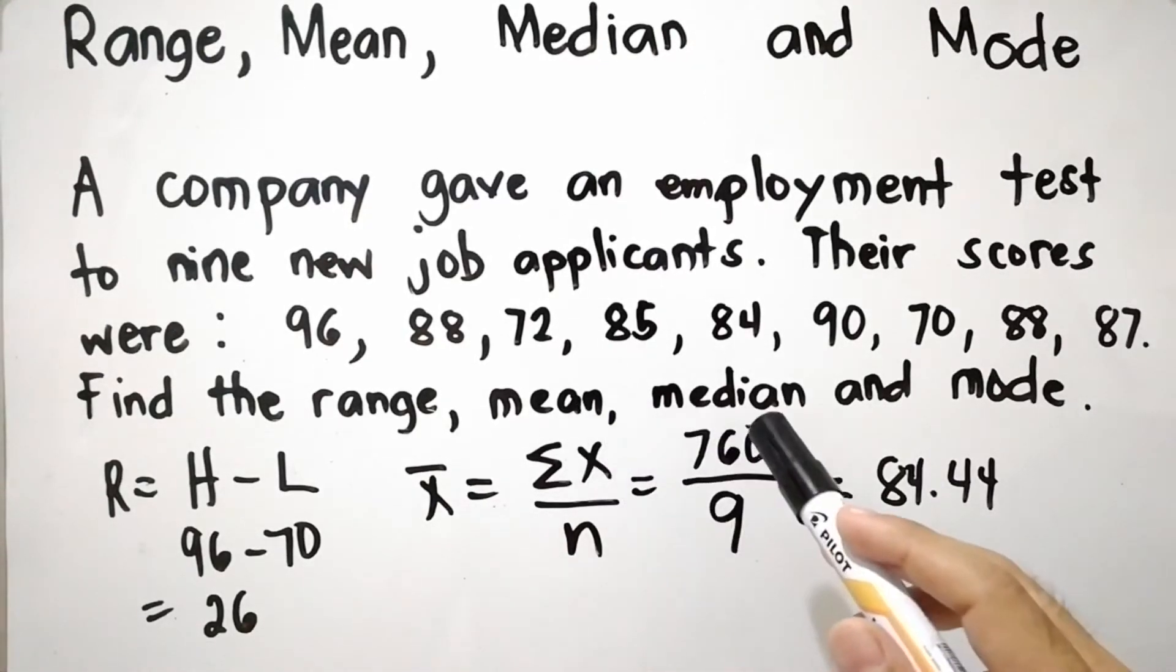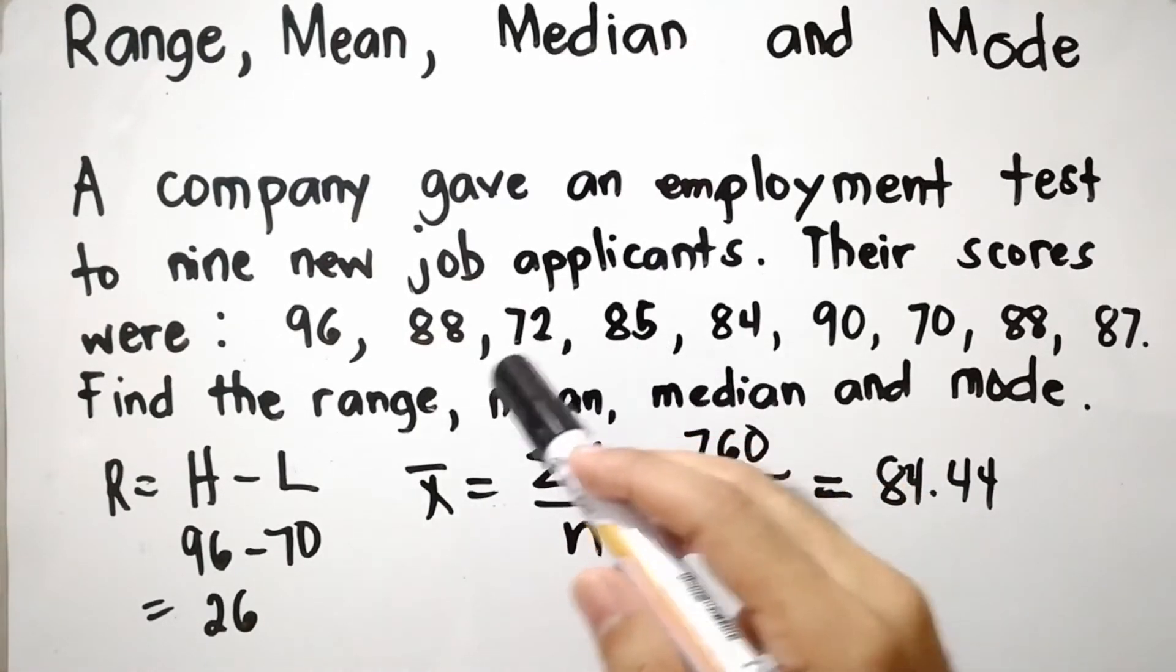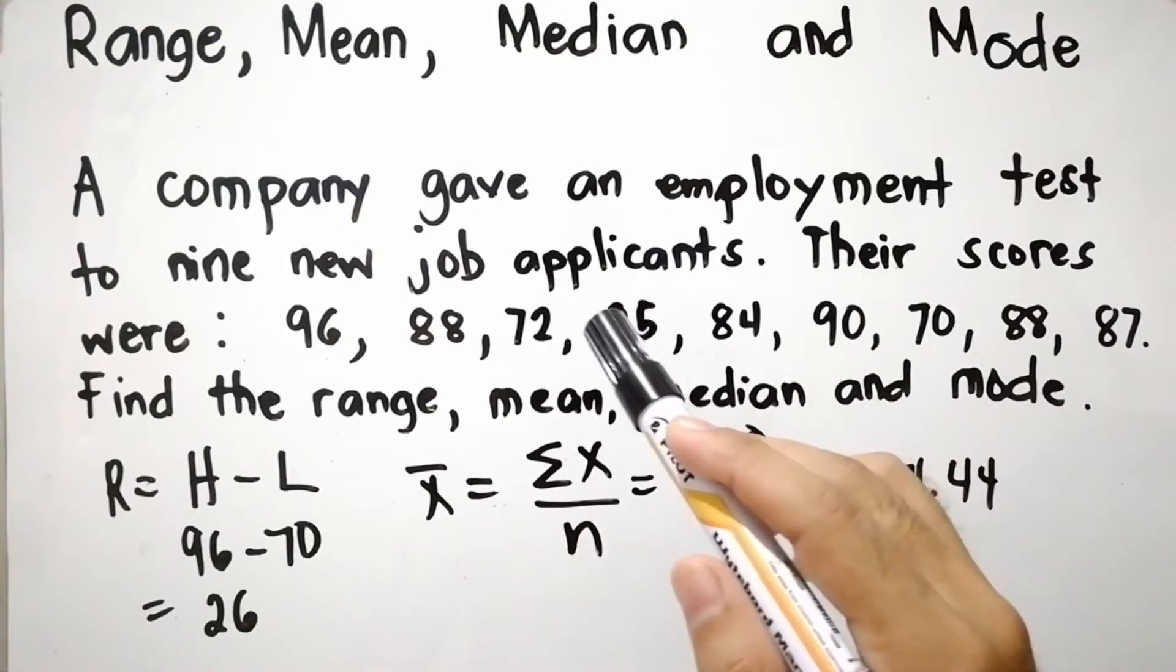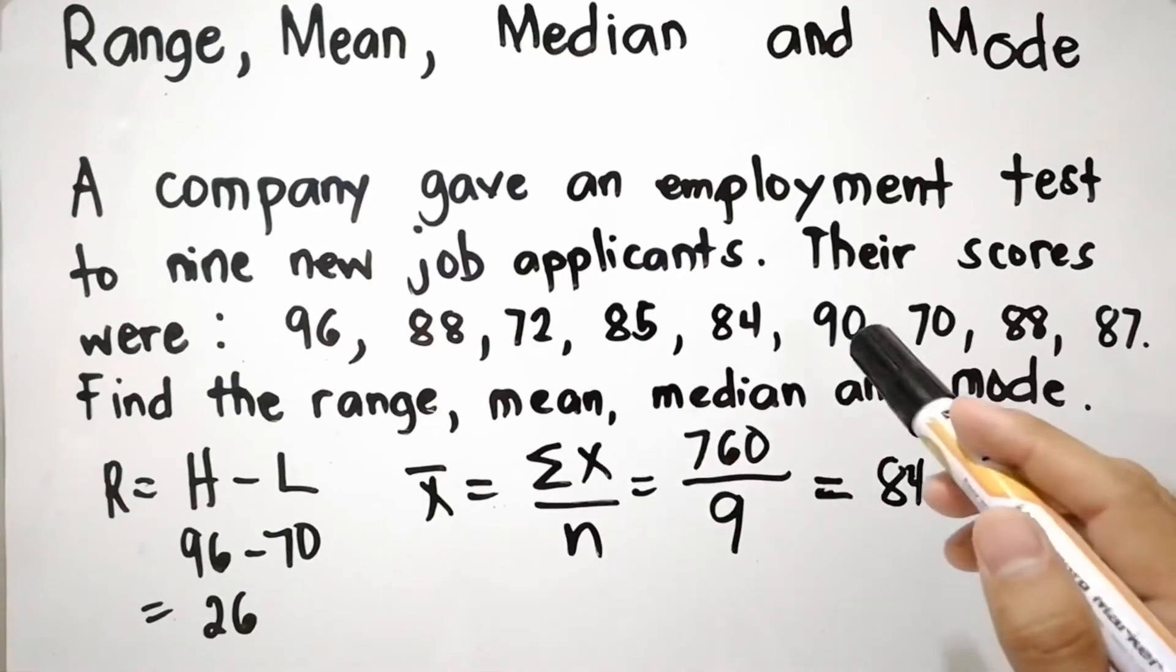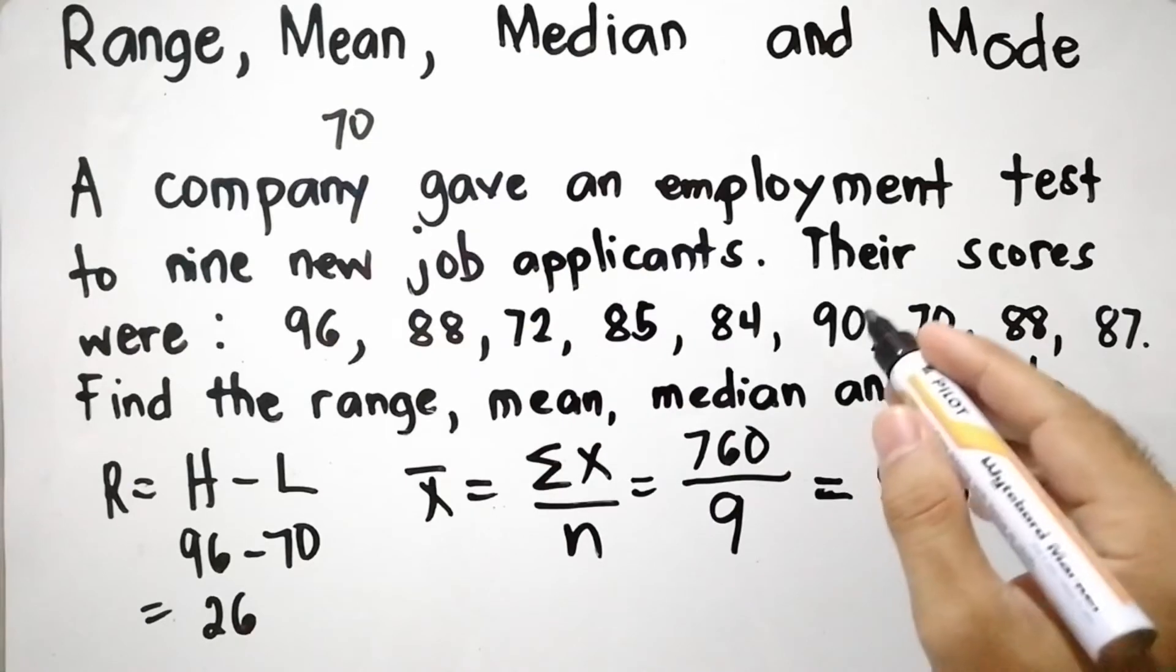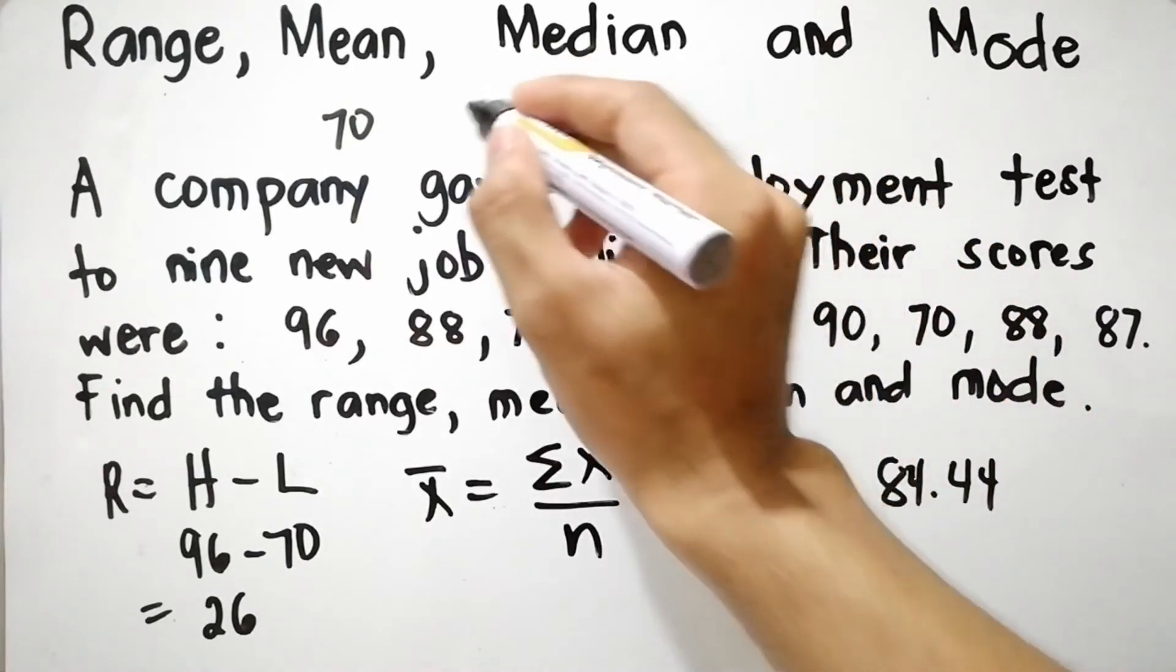Now, let us find the median or the middle value. To find the median, we need to arrange the data in ascending order from least to greatest. So the first one is 70. The second one is 72.